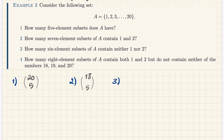Number 3: how many 6-element subsets of A contain neither 1 nor 2? Since 1 and 2 must be excluded, I choose all 6 elements from the remaining 18 items that are not 1 or 2. So the answer is 18 choose 6.